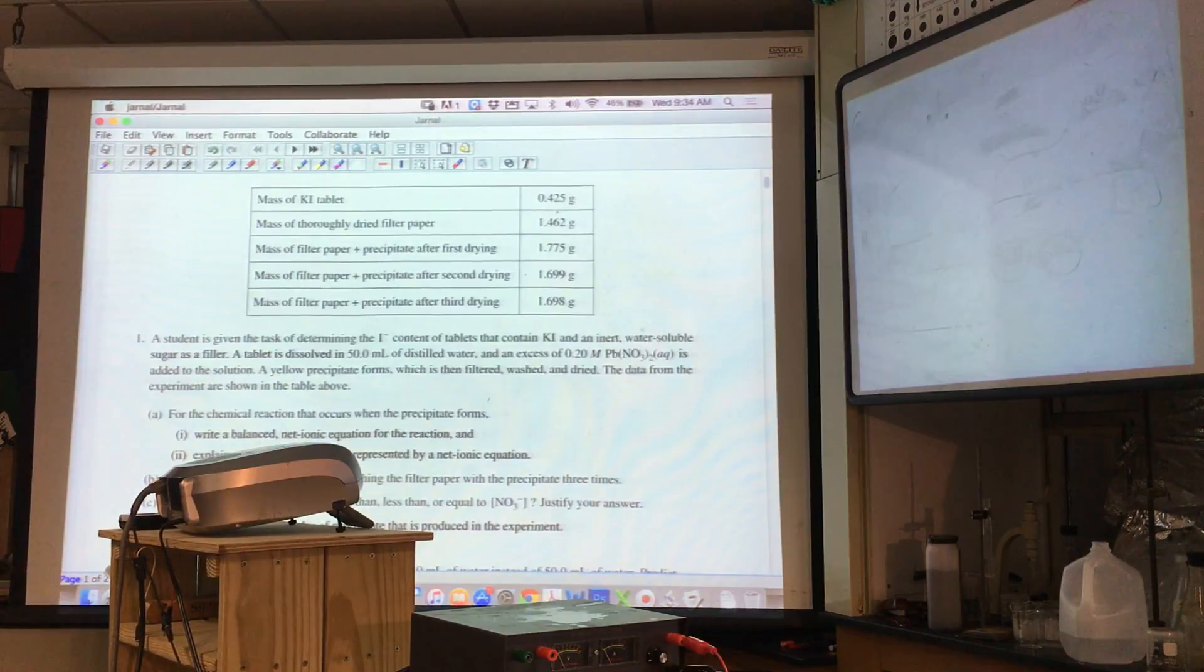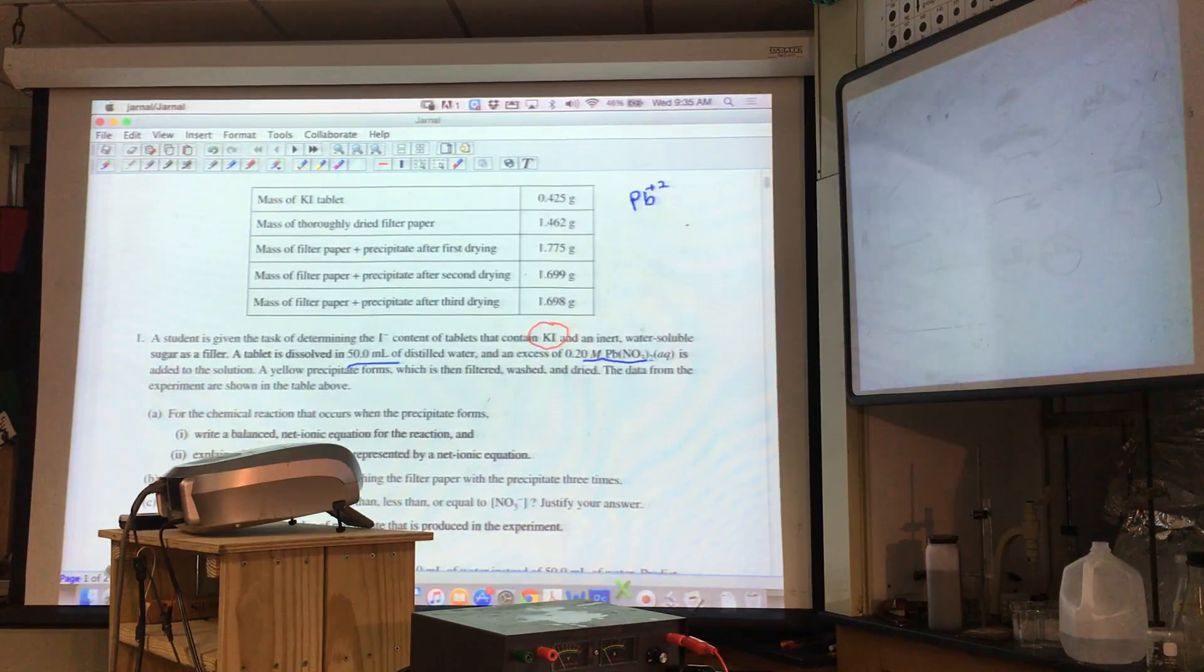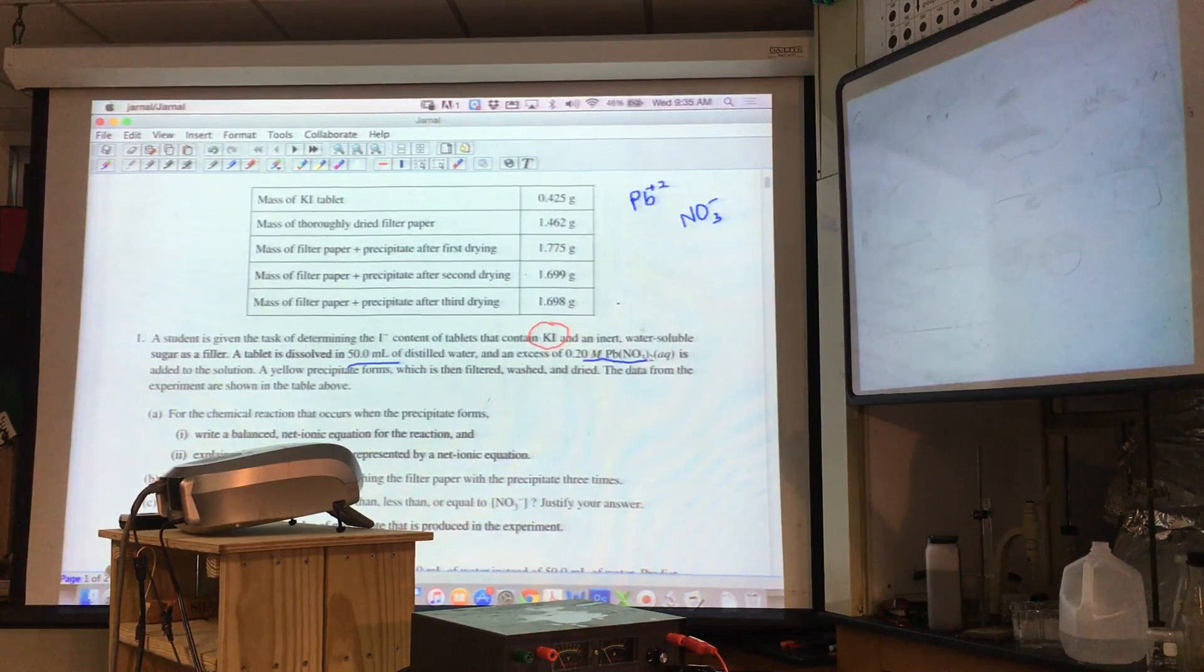So I've got a KI tablet, thoroughly dried filter paper, precipitate, all this stuff. Students get a test of determining the iodine or I-negative content of tablets. This is one of those empirical or analytical chemistry type of questions. An inert water-soluble sugar as a filler. The tablet is dissolved in 50 milliliters of water with an excess of lead nitrate. Lead nitrate means very simply that I have lead plus two and NO3 minus. Anything with nitrate is completely soluble. It's added to a solution, a yellow precipitate forms, a solid appears.